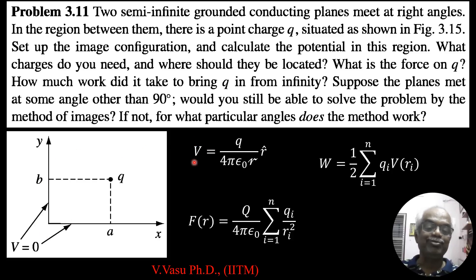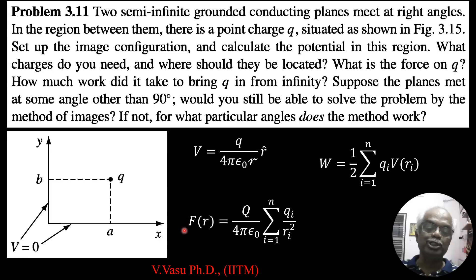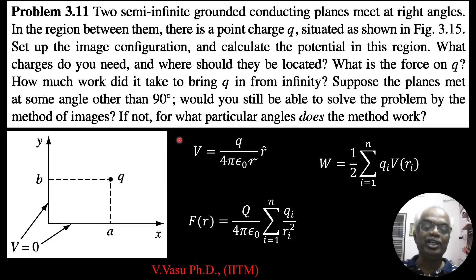So V equals zero on each conductor. By definition, the potential is equal to Q divided by 4π ε₀ times 1 over script R along the R direction. The work done is equal to one-half times the summation over i from 1 to N of q_i times V(r_i). And the force is equal to Q over 4π ε₀ times the summation over 1 to N of q_i over r_i squared. Using these three formulas we will calculate all the quantities asked in the problem.